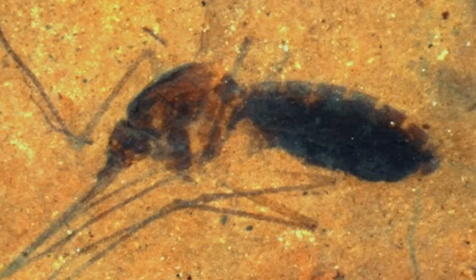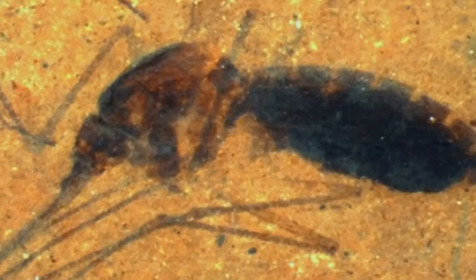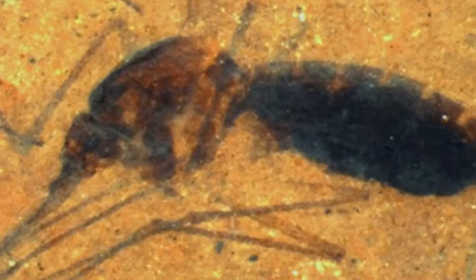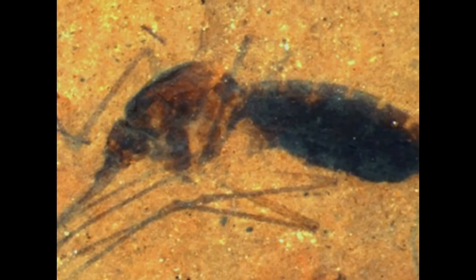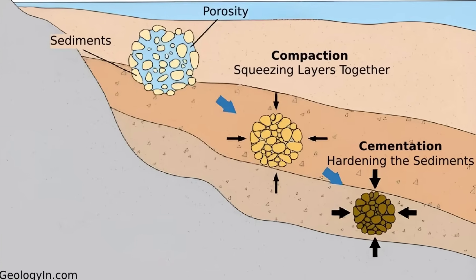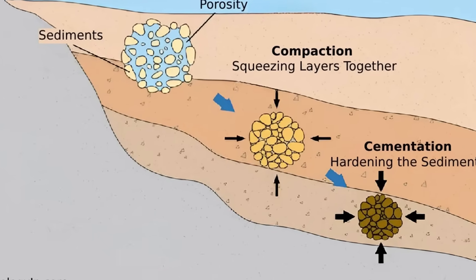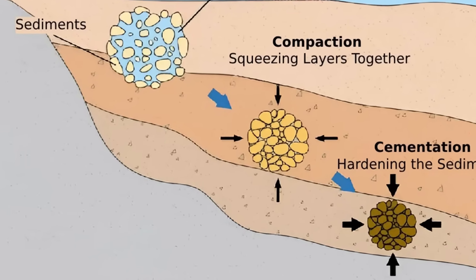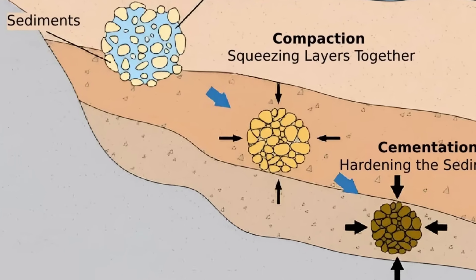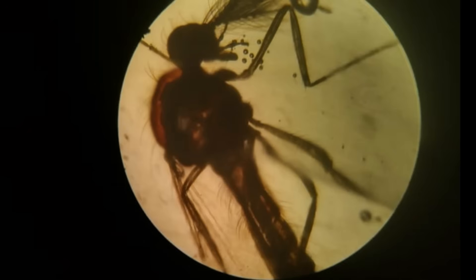First, let's understand what is a fossil. A fossil is a trace of an ancient living being. When a living being dies, its sediments along with the rock and the sand mix and eventually decompose and go. But some organisms can get trapped somewhere. For example, a mosquito can get trapped in amber and it can get preserved in that and eventually it will be fossilized.